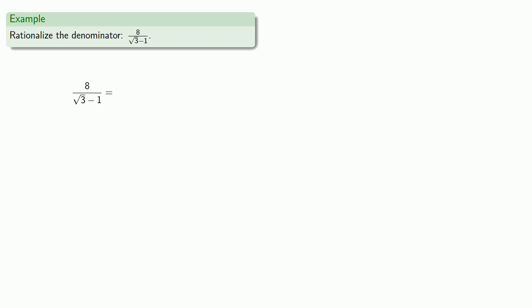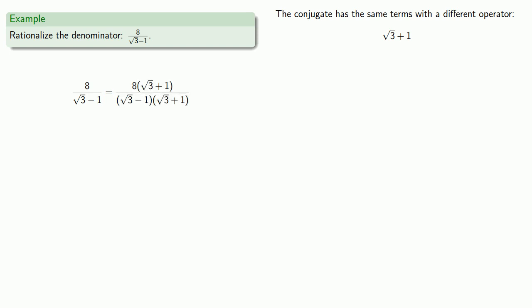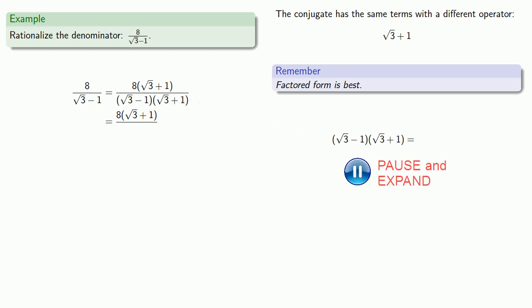The denominator — square root of 3 minus 1 — we can rationalize by multiplying by the conjugate. The conjugate has the same terms — square root of 3 and 1 — with a different operator: instead of a minus, we write a plus. Multiplying numerator and denominator by the conjugate. Factored form is best, so we'll leave the numerator as 8 times square root of 3 plus 1. But because we wanted to get rid of the radicals in the denominator, we do have to expand, which gives us a denominator of 2.